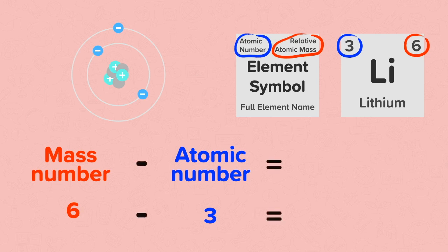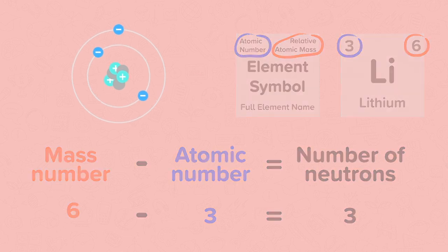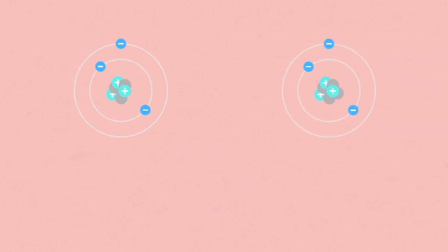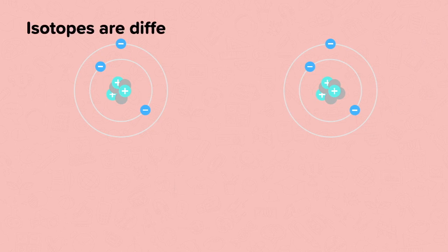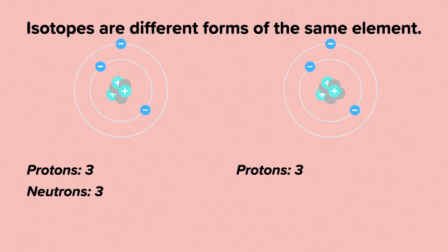The difference between the two numbers tells us the number of neutrons in the nucleus. Here we have two isotopes of lithium. Isotopes are different forms of the same element. They are the same element so they have the same number of protons, but they have different numbers of neutrons.